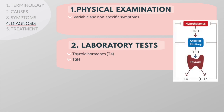TSH measures how much thyroid hormone the thyroid gland is being asked to make. An abnormally high TSH and low T4 means hypothyroidism.